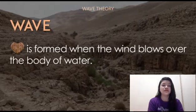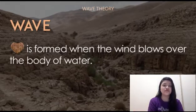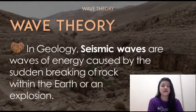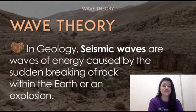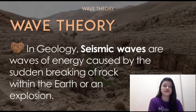When a wave gets near the shore, the wave at the bottom drags against the seafloor while the top keeps moving. The wave gets narrower and higher and eventually topples over. In geology, seismic waves are waves of energy caused by the sudden breaking of rock within the earth or an explosion. They are the energy that travels through the earth and is recorded on seismographs.